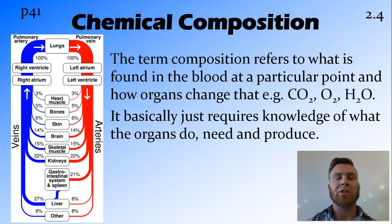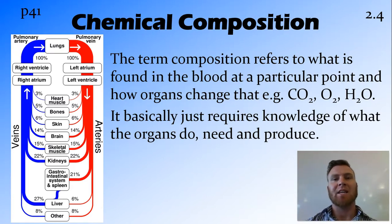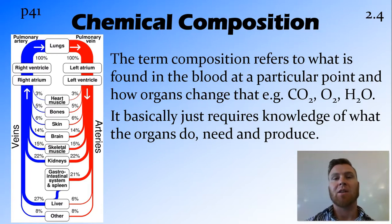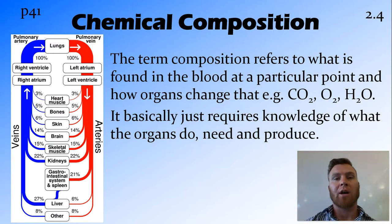So firstly, what are we talking about with chemical composition? What we are actually meaning is what is in the blood — what chemicals are in the blood at any particular time. So these chemicals could be carbon dioxide, oxygen, water, urea, bicarbonate ions — all these sorts of things are chemicals that are found in the blood.